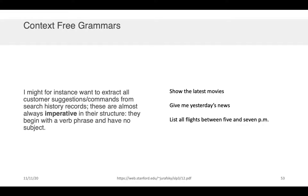I might for instance want to extract customer suggestions or commands from search history records. These are almost always imperative in their structure, that is they begin with a verb phrase and have no subject. So you could see how I could construct, if I knew something about the qualities or the structure of the language I could try to specifically seek out the imperative components of the sentences or imperative sentences which are those to begin with a verb phrase and have no subject and I could extract those from a very long complicated text. So here's some examples of imperatives: show the latest movies, give me yesterday's news, list all flights between 5 and 7 p.m.